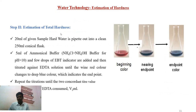Next is estimation of total hardness — we have to find both permanent and temporary hardness combined, which is called total hardness. We take the sample water in a flask, add buffer solution, then add a few drops of EBT indicator. The metal-EBT complex is formed, giving wine red colour. Then we titrate with EDTA until the colour changes from wine red to blue. At the end point, we note down the volume of EDTA consumed, recorded as V2 ml.